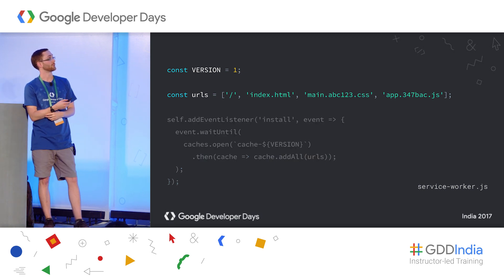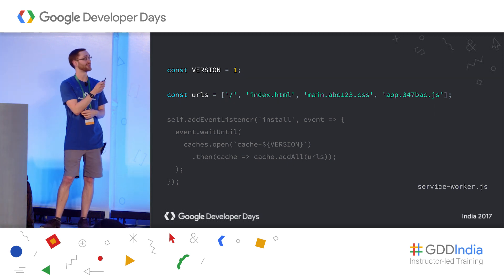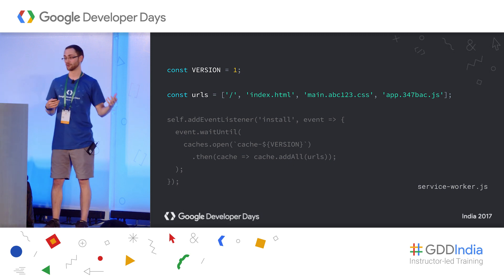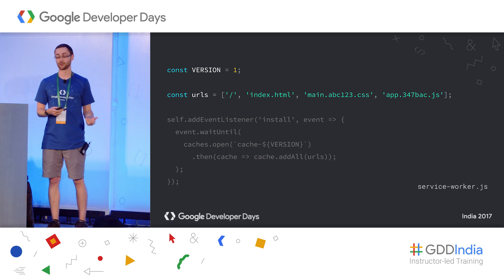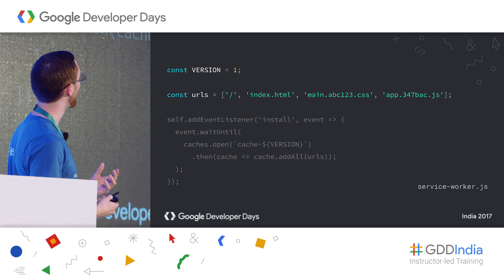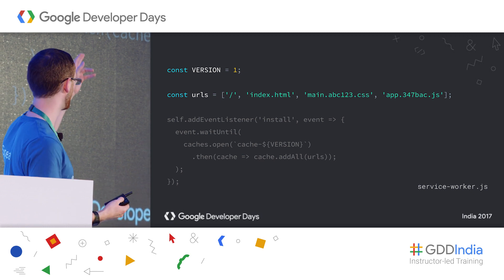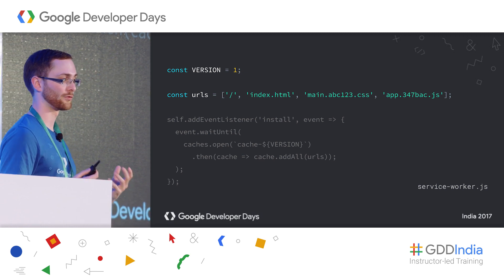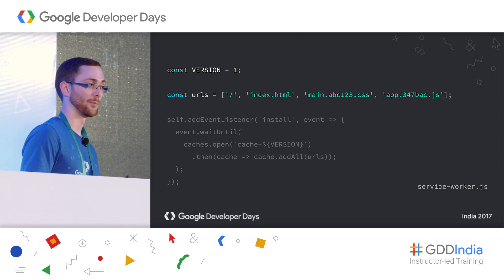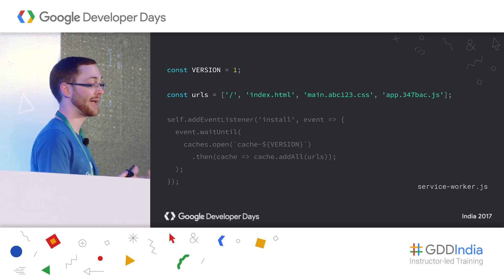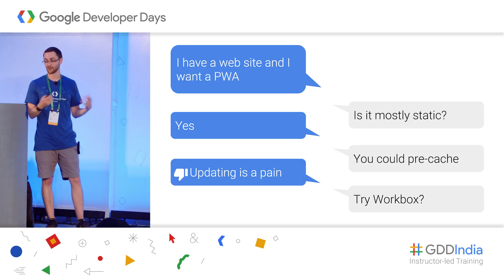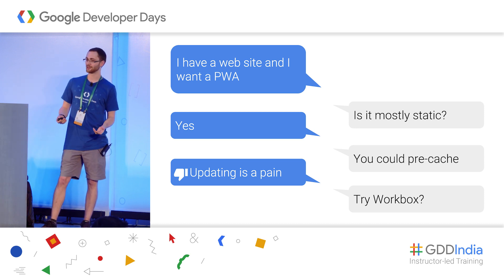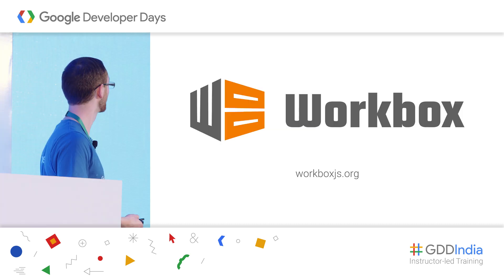This works great unless you ever change your app. If you make a change to one of your files or add new files, you have to come back and manually update the list, which gets really annoying quickly. Also, if you have routing — for example, slash and index.html both serve index.html — the cache API doesn't know that, so you'd have to manage multiple URLs for the same resource. Updating is a pain.